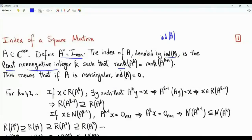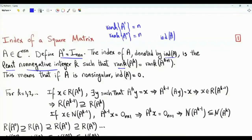If k is equal to 0, we define A to the 0 to be the identity matrix of size n by n. If A is an invertible matrix, then the rank of A, which is the rank of A to the power 1, is n. And the rank of A to the power 0, which is the identity, is also equal to n. This equality is satisfied with k equal to 0. If A is non-singular, that is, if A is an invertible square matrix, then its index is equal to 0. If A is singular, then the index is strictly greater than 0.